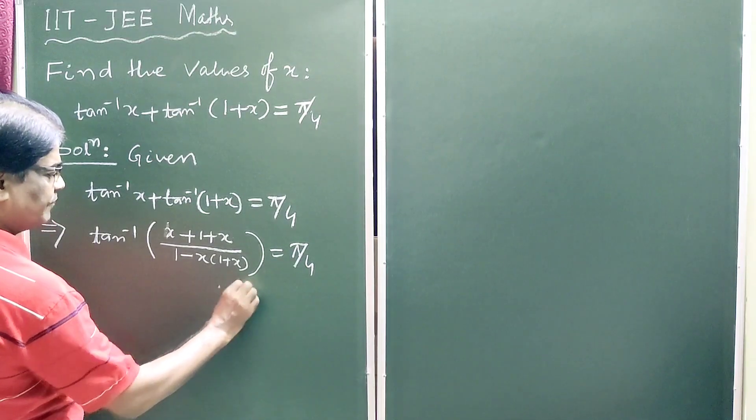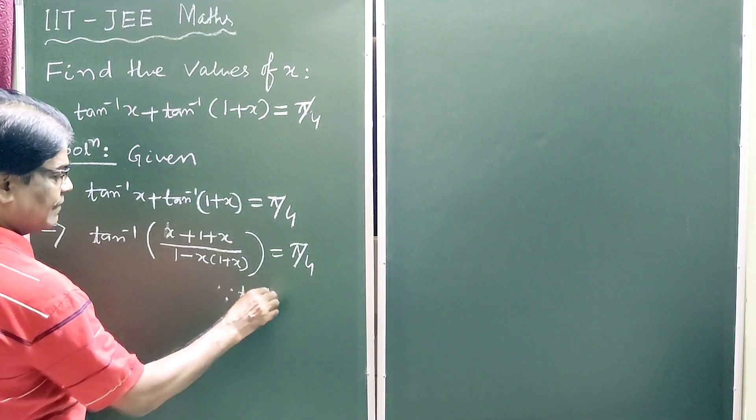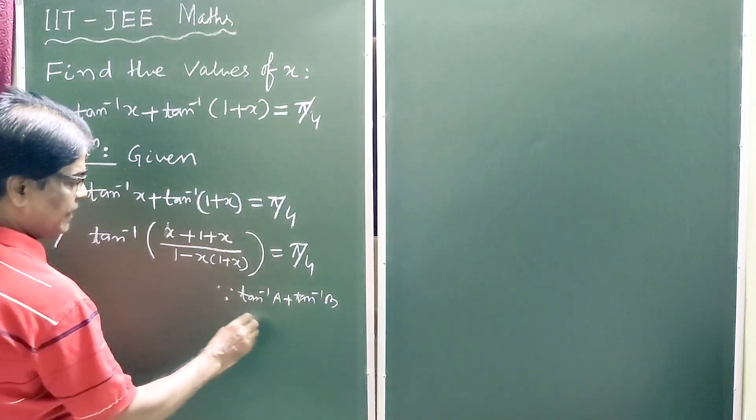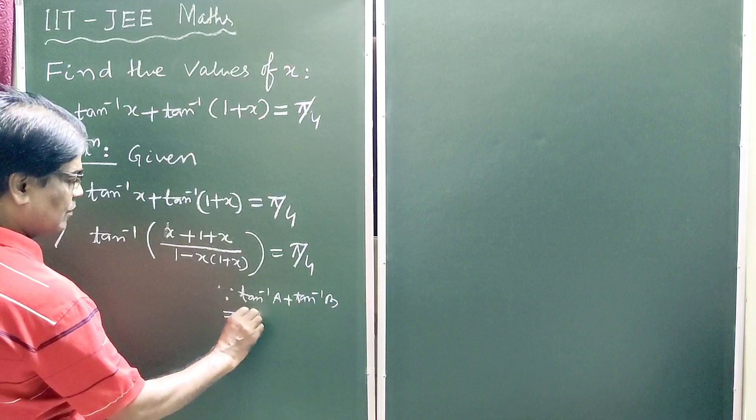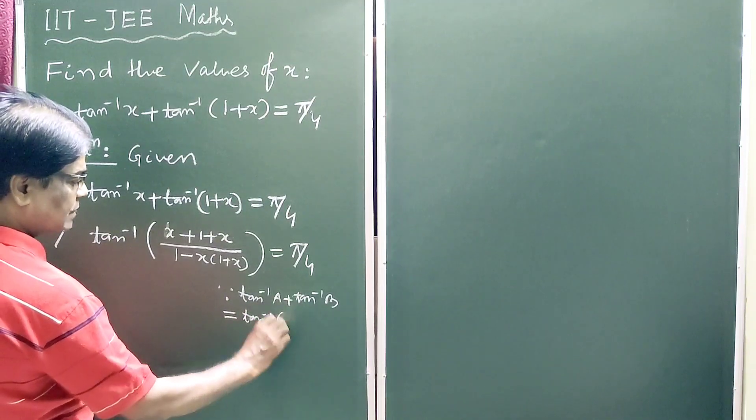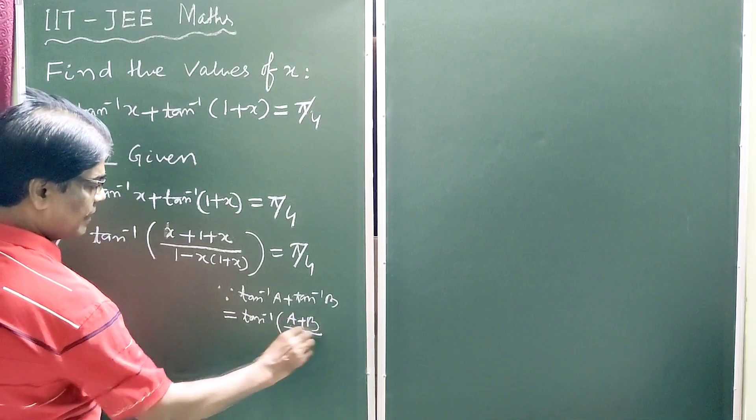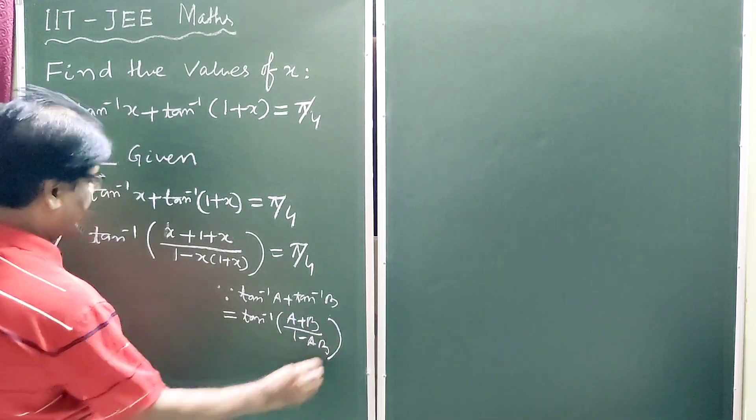Since tan inverse A plus tan inverse B is equal to tan inverse of A plus B by 1 minus A times B.